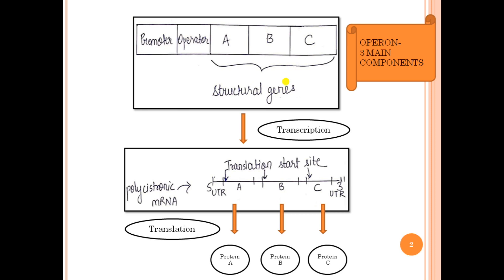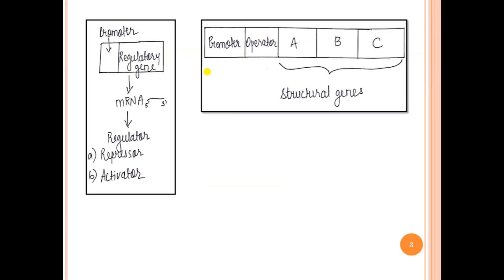It is quite economical for the cell. So how does this operon bring about this regulation? It does so with the help of the operon element called the operator. The operator regulates the expression of the structural genes with the help of another gene called the regulatory gene. This regulatory gene could be present adjacent to the operon, as a part of the operon, or further away from it.